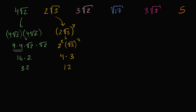So what is three square roots of two, squared? It's going to be three squared, which is nine, times the square root of two squared, which is two. Nine times two is 18. What's the square root of 17 squared? Well, that's just going to be 17.